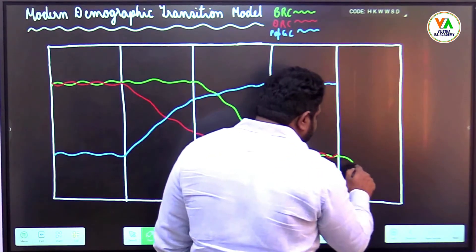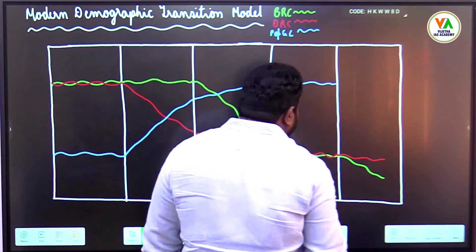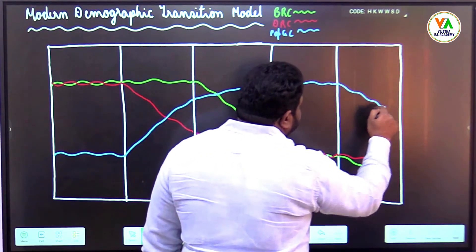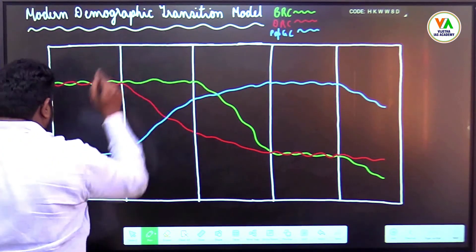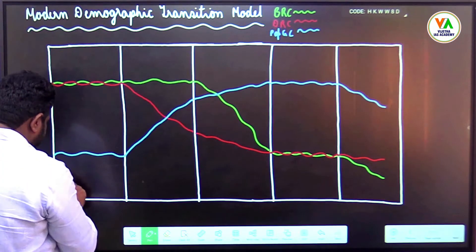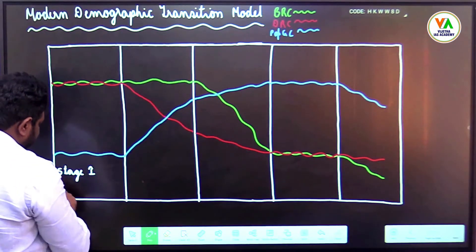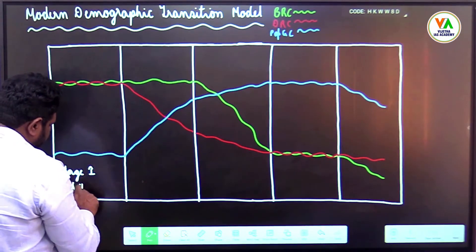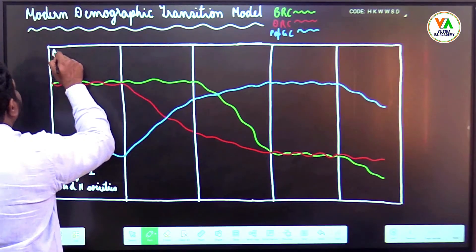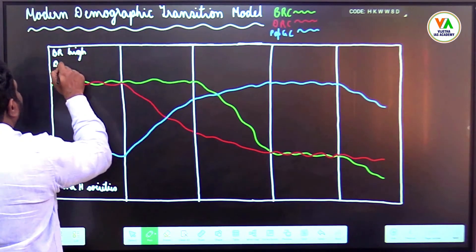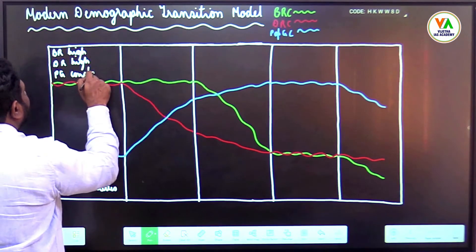Now, birth rate decreases and death rate is constant — population growth declines. This is Stage 1. Stage 1 example: food gathering and hunting societies. Birth rate high, death rate high, population growth constant.